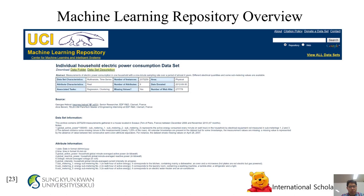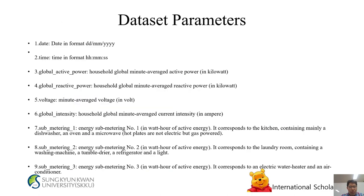Machine learning repository: This dataset is from the UCI machine learning repository — the Individual Household Electric Power Consumption dataset. Dataset parameters include: (1) date, (2) time, (3) global active power, (4) global reactive power, (5) voltage, (6) global intensity, (7) sub-metering 1, (8) sub-metering 2, (9) sub-metering 3.